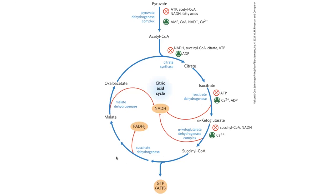If we have plenty of downstream components backing up, we don't add more stuff in. If we don't have plenty of those, and we don't have NAD+, keep adding things. If we stop adding things, these intermediates build up and provide feedback up the line to go do other things with these components.